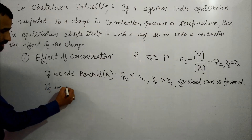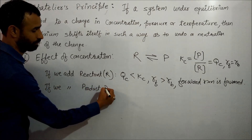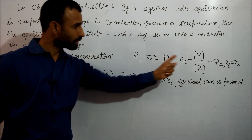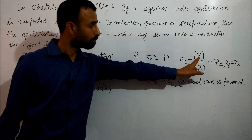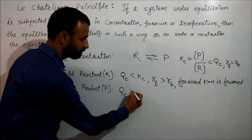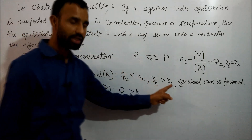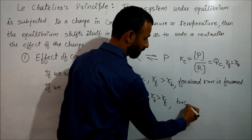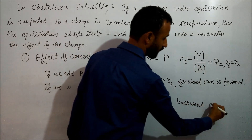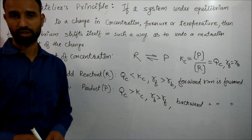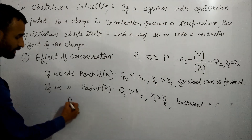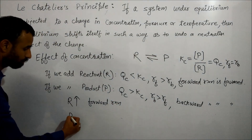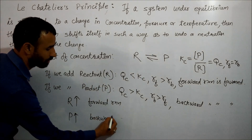If we add product into the already established equilibrium, product increases, which means Qc becomes greater than Kc. As product increases, backward rate is faster than forward reaction. Therefore, backward reaction is favored by the reaction. So if we increase the reactant, forward reaction is favored; if we increase the product, backward reaction is favored.